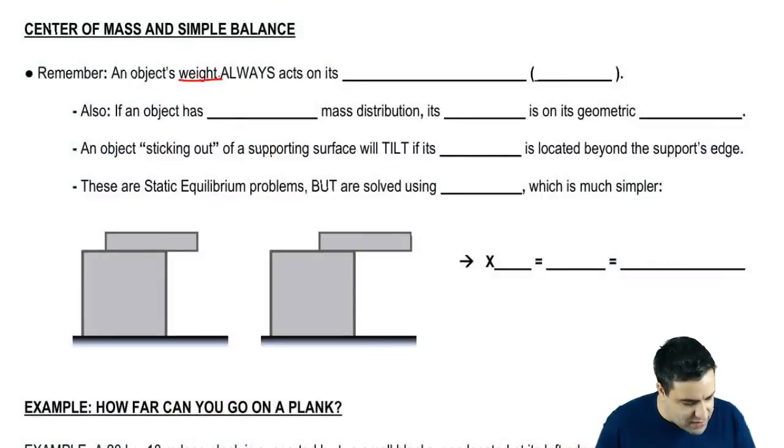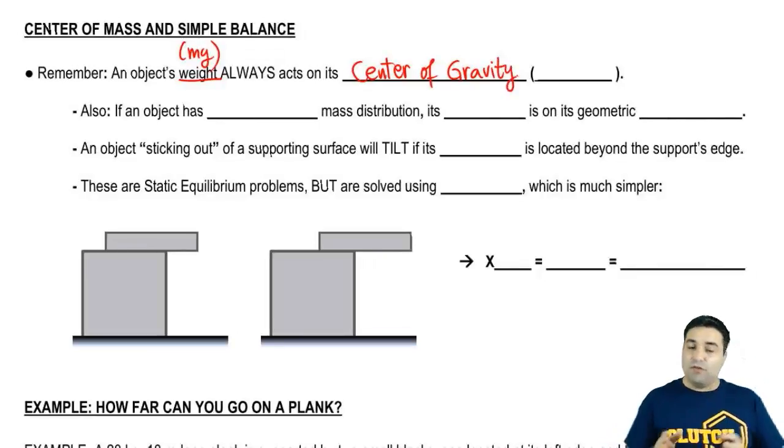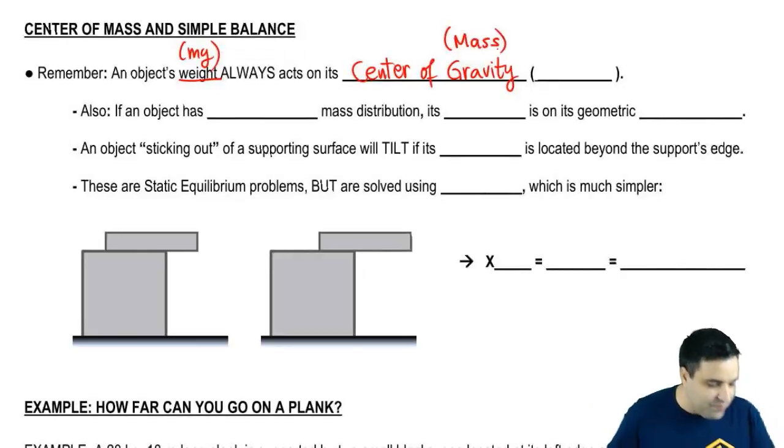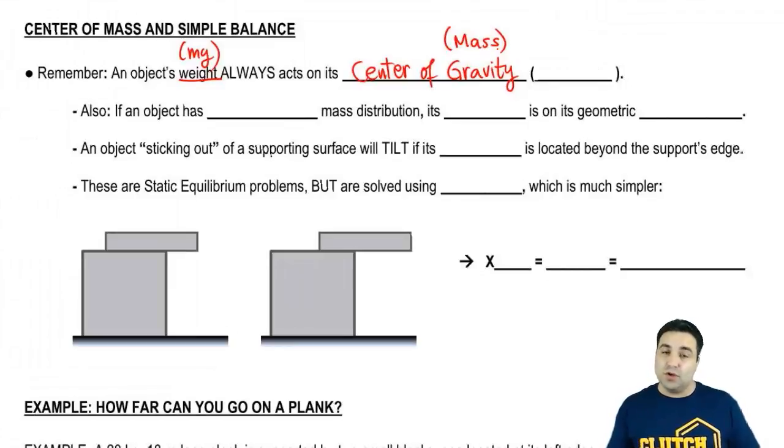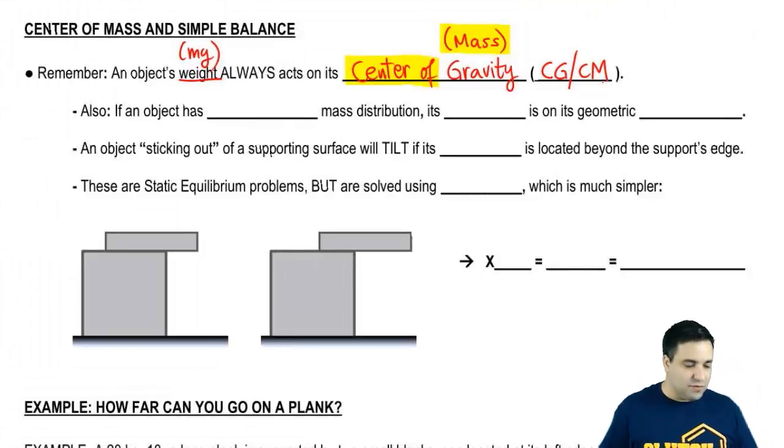So first of all, remember that an object's weight, mg, always acts on the object's center of gravity. It's called center of gravity because that's where gravity acts. Now, for most of you, most of the time, center of gravity means the same thing as center of mass. If your professor has made a big deal about the difference between the two, then you need to know the difference between them. I'm not going to talk about it in this video. For a vast majority of you guys and for a vast majority of physics problems, all you need to know is that the two things are really the same. So I'm going to call this center of gravity or center of mass. In fact, some of you will never really see a problem where they are different.